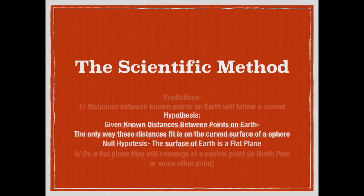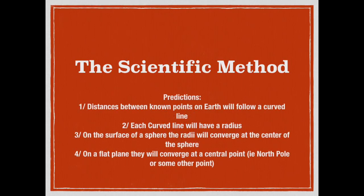Now we look at curves and proceed to our predictions. Number one: the distance between two known points follows a curved line on the surface of a sphere. Number two: each curved line will have a radius. Number three: on a sphere, all radii will converge at the center and be the same length. On a flat plane, they converge on a central point but don't necessarily have to be the same length.